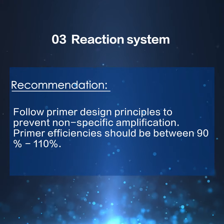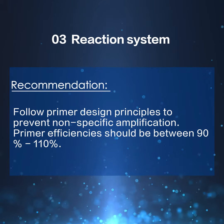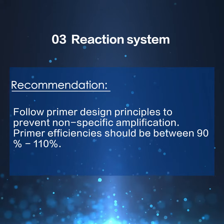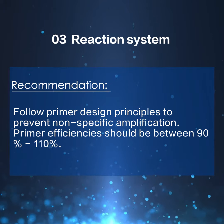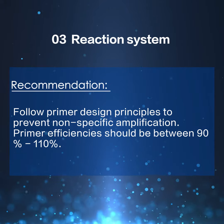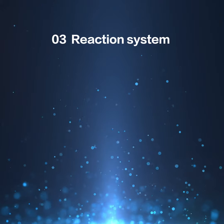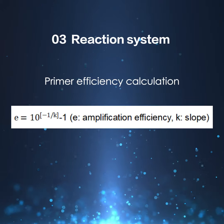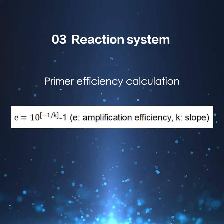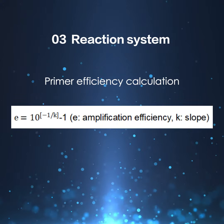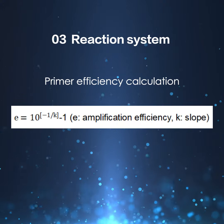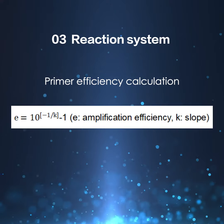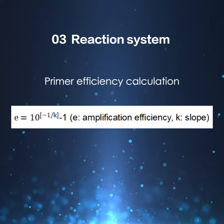Recommendation: follow primer design principles to prevent nonspecific amplification. Primer efficiency should be between 90% to 110%. The target gene is diluted in different gradients and used as a template for qPCR. Obtain auto-fit standard curves from the qPCR system, and plug the slope of the standard curve into the primer efficiency formula.